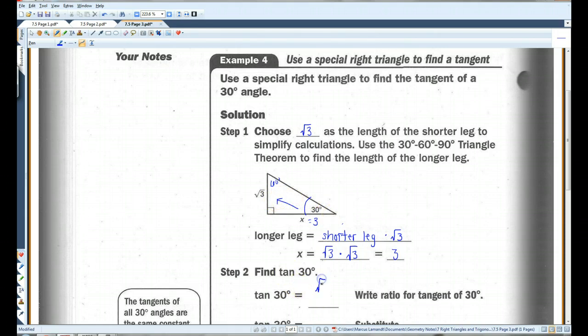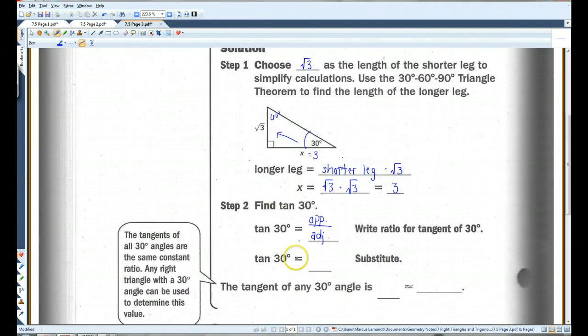If we're looking for tangent of 30 degrees, that's going to be the opposite over, oops, they want us to write out the ratio again. You don't have to do this in your actual notes, but they want it in here. Opposite over adjacent.